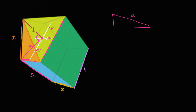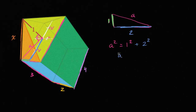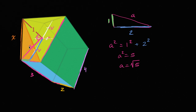We know that this length is half of this side, so that's going to be one. And this other side is going to be of length two. So we can just use the Pythagorean theorem here. We know that the hypotenuse squared is going to be equal to one squared plus two squared, which of course is equal to one plus four, which is equal to five. So we can write a squared is equal to five, or a is equal to the principal root of five. So this length right over here is the square root of five.